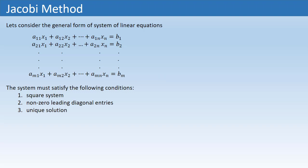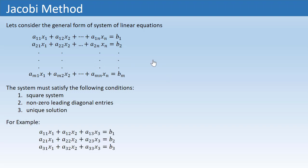If these three conditions are satisfied, then the system can be solved using the Jacobi method. For example, we have a 3×3 square system. If we assume that this system has a unique solution and the leading diagonal entries A11, A22, A33 are non-zero, then we can solve this using the Jacobi method.